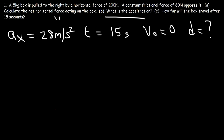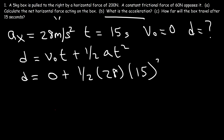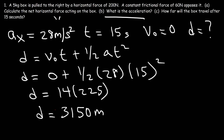The kinematic equation we need is: displacement equals v-initial times t plus one-half a t squared. The initial speed is zero, so it's going to be one-half times 28 times 15 squared. Half of 28 is 14, and 15 squared is 225. So 14 times 225 gives a displacement of 3,150 meters, which is 3.15 kilometers. That's how far the box will travel with these two forces applied.